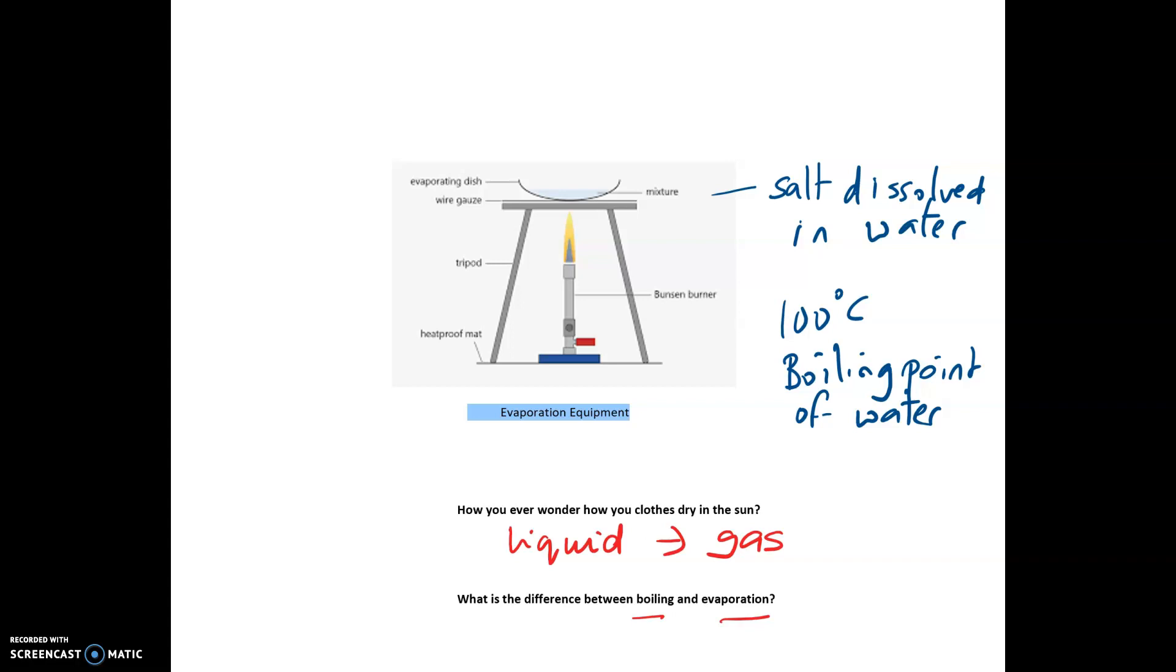Now, what factors affect evaporation? There are four factors that affect evaporation. Let's have a look at them. The factors affecting evaporation are temperature. Obviously, the higher the temperature, the faster the rate of evaporation.